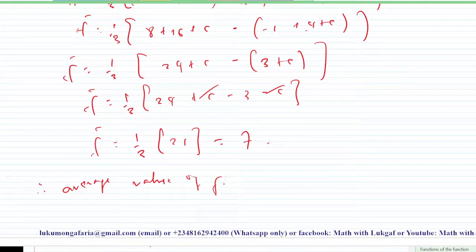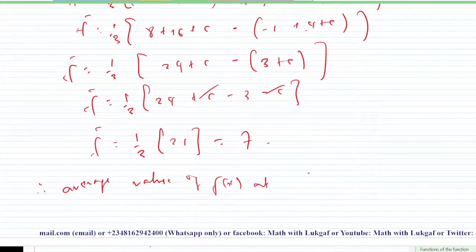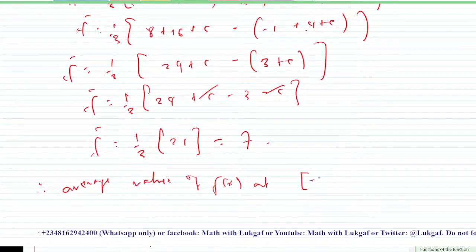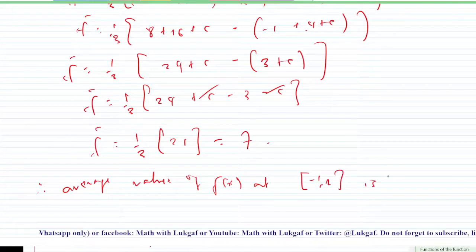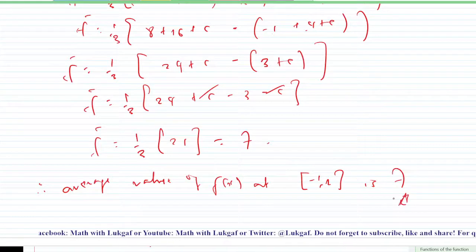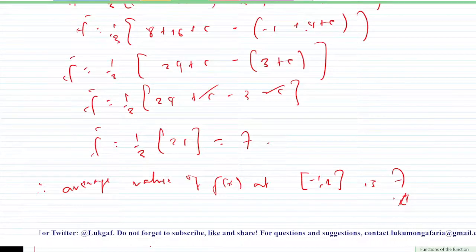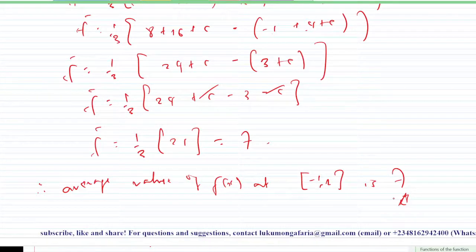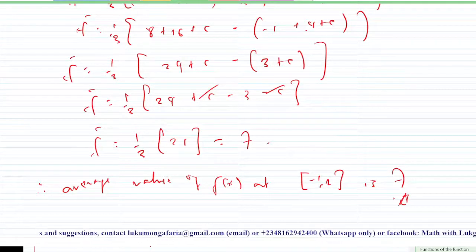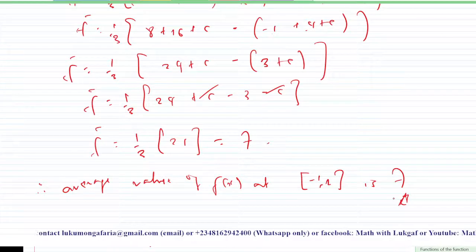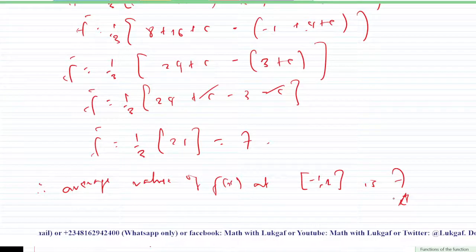We conclude that the average value of f(x) over the interval [−1, 2] is 7. It's as simple as that! If you enjoyed the video, please click the like button, subscribe to my channel, and check out my playlists on different aspects of mathematics. Thank you so much.